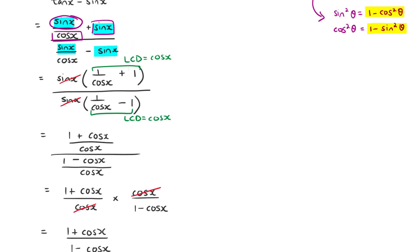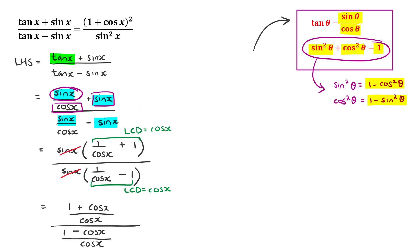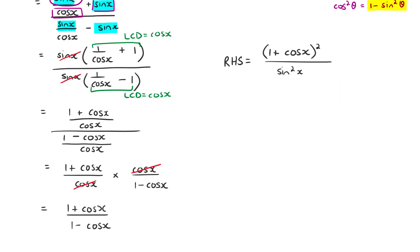The problem is this doesn't match the right-hand side, so we need to work on the right-hand side as well — one of the few circumstances where we do that. Looking carefully at both sides, we can see we have (1 plus cos x) on the left-hand side and also (1 plus cos x) on the right-hand side; the only difference is it's squared on the right.